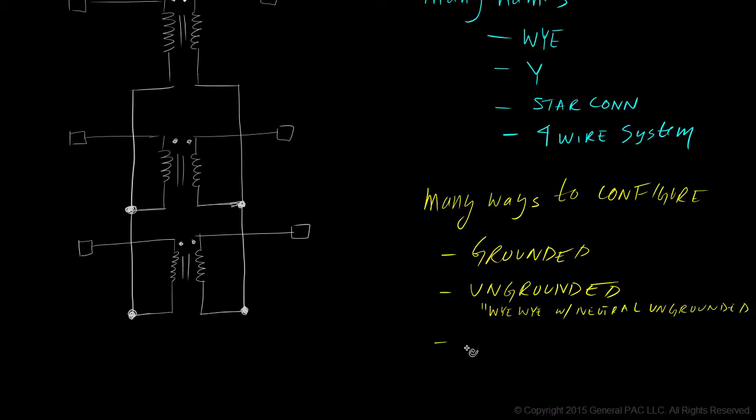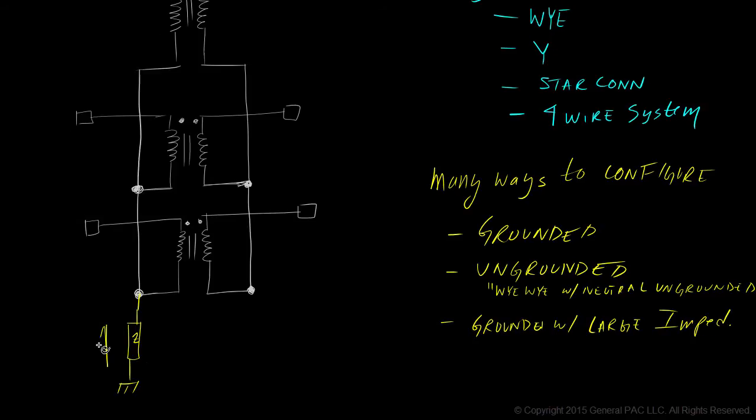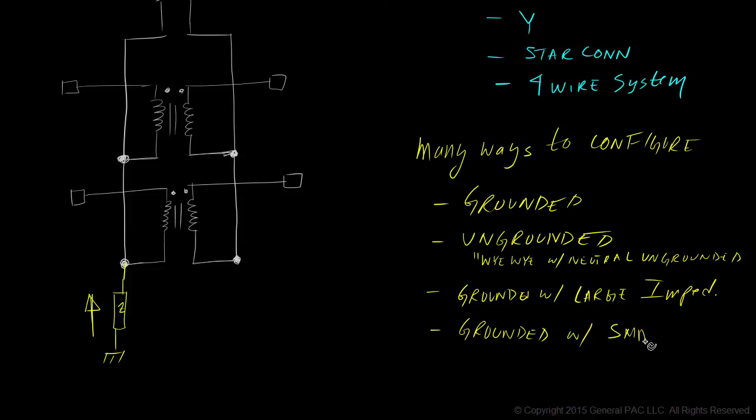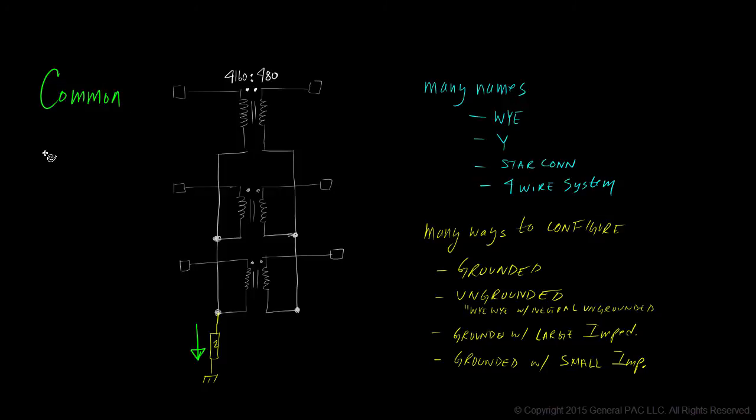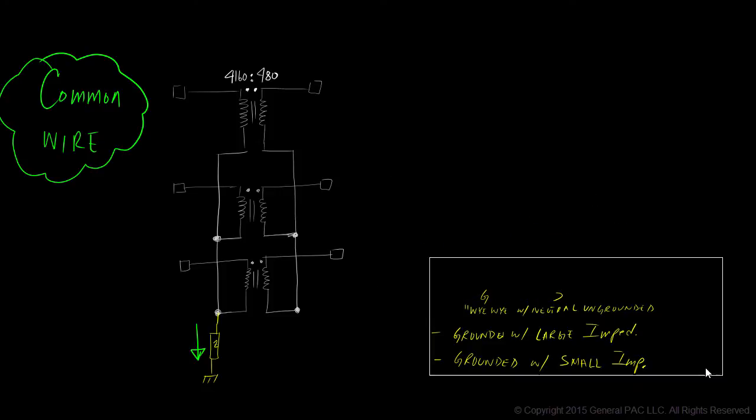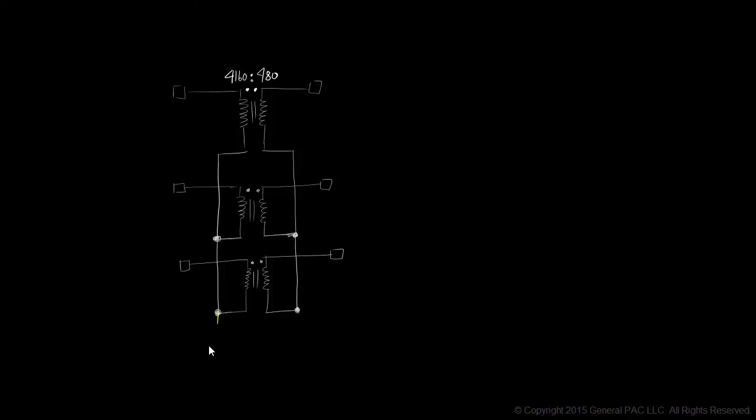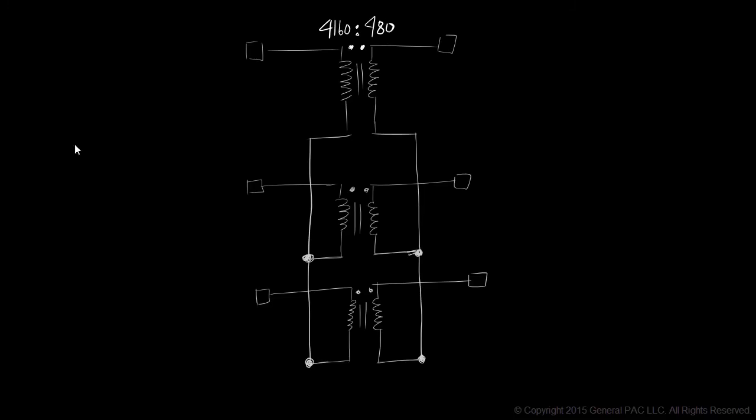Sometimes the fourth wire is grounded with a very large impedance like this. And sometimes it's grounded with a small impedance. Nonetheless, a four-wire system is distinguished by a common wire that connects all three windings together to a common point. In our example, we'll keep our discussion simple and solidly ground both sides of the transformer.